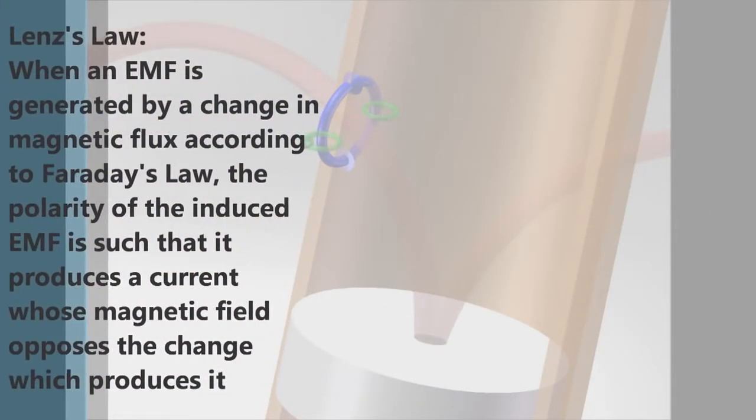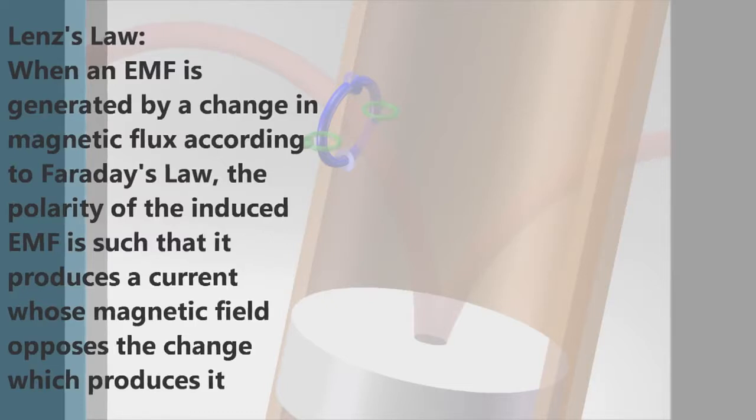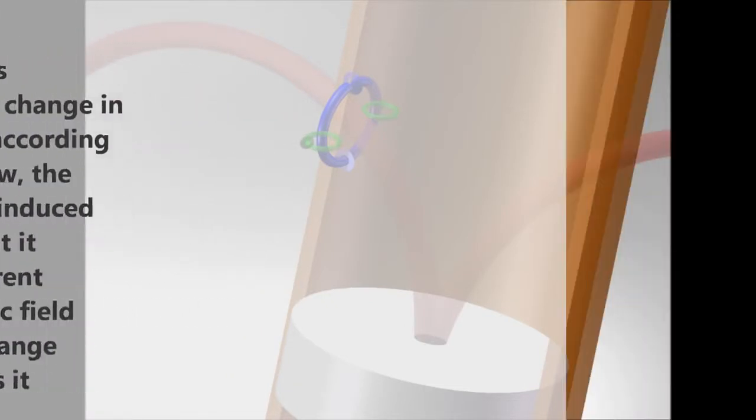Another law predicts the direction these induced electric currents and their magnetic fields will flow. This is called Lenz's law. Lenz's law states that when an electromagnetic field is generated by a change in magnetic flux, according to Faraday's law, the polarity of the induced electromagnetic field is such that it produces a current whose magnetic field opposes the change which produces it.